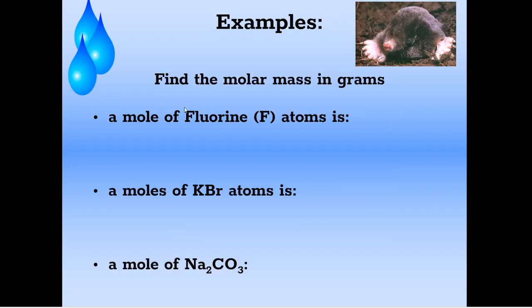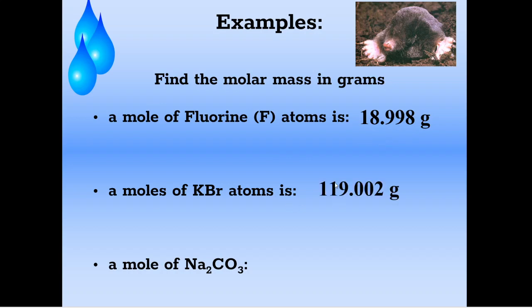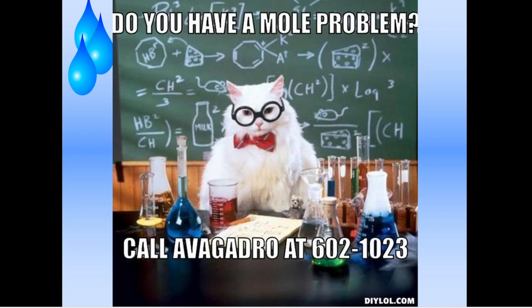I want you to pause this video and practice. Find the molar mass of: a mole of fluorine atoms in grams, a mole of potassium bromide, and a mole of sodium carbonate. Take a minute, do it on a piece of paper, then come back and check your answers. A mole of fluorine is 18.998 grams, a mole of potassium bromide is 119.002 grams, and a mole of sodium carbonate is 105.998 grams. If you're still having trouble, please get a hold of me and I'll help you practice.